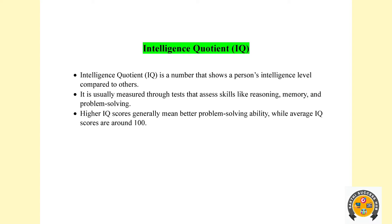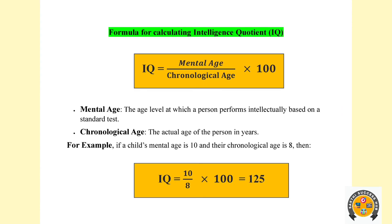How do you calculate IQ? There is a very important formula: IQ = (Mental Age / Chronological Age) × 100. Mental age refers to your intellectual level, while chronological age is your present age. For example, if a child has a mental age of 12, we can calculate their IQ using this formula.